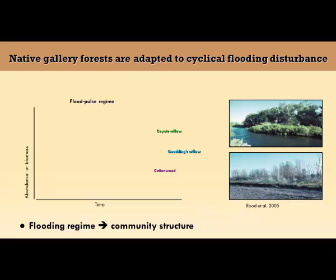The native cottonwood-willow gallery forests in the southwest are adapted to cyclical flooding. Rivers and riparian ecosystems they support are naturally dynamic systems, and that's the most important thing to keep in mind when you're planning restoration at a site scale. As well as at the watershed scale — you need to look upstream, because things happening upslope and upstream are affecting your site.